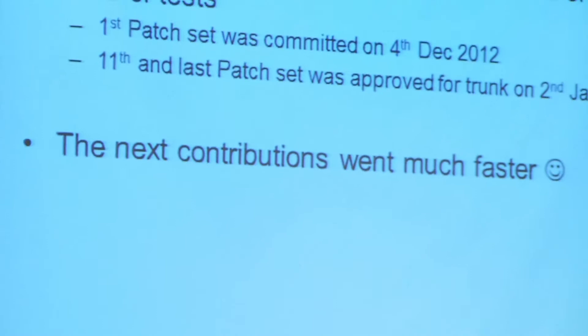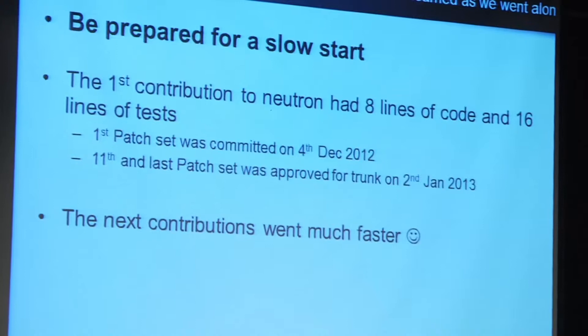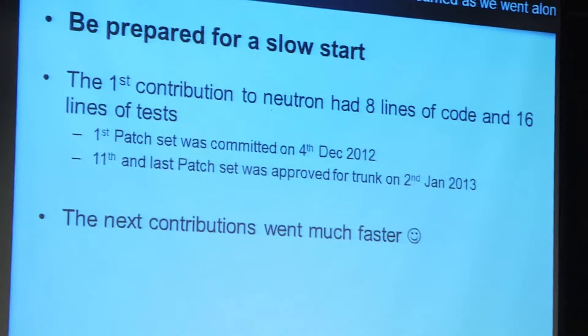What I'd like to talk about are the three key things that were strange to us when we started developing — not really trivial in your expectations. The first one is: be prepared to start slow. I remember we said we're going to start contributing to OpenStack, and about a week later people said, 'What are you doing? This is a company — we gave you the money. What are the results?' The start might be really, really slow. Our first contribution to Neutron was very small — eight lines of code and 60 lines of tests. We submitted the first patch at the start of December, and about a month later we were able to commit.